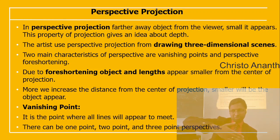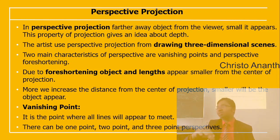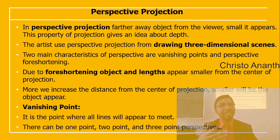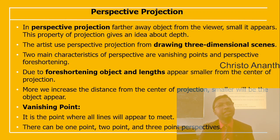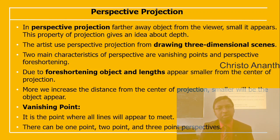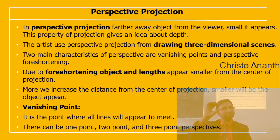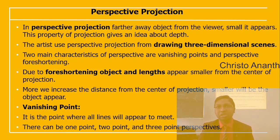In perspective projection, objects farther away appear smaller. This property gives the idea of depth. Artists use perspective projection for drawing 3D scenes. Two main characteristics are the vanishing point and perspective foreshortening. Due to foreshortening, objects appear smaller as the distance from the center of projection increases.